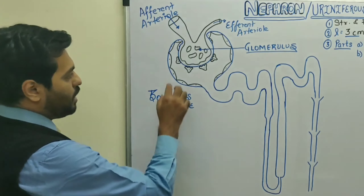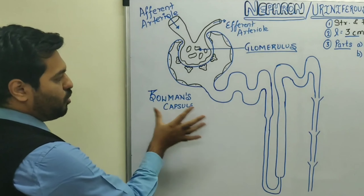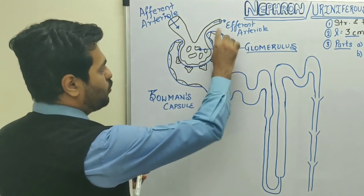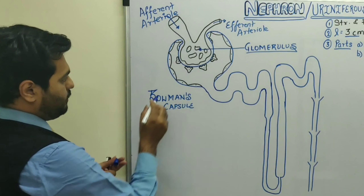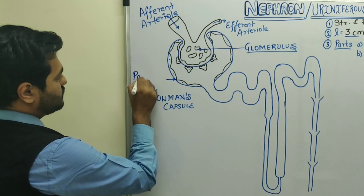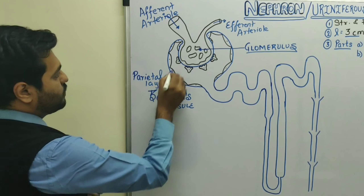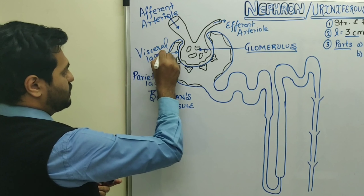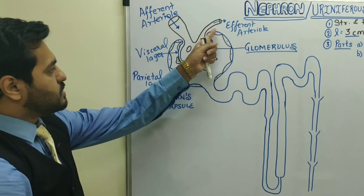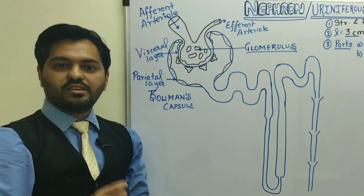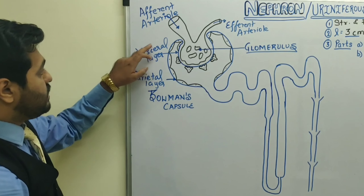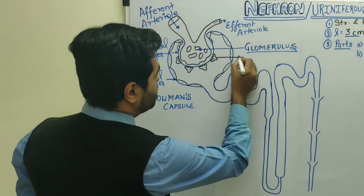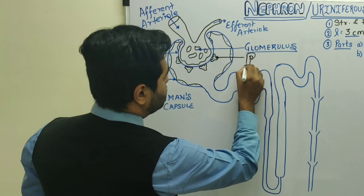This glomerular hydrostatic pressure is responsible for the first step of urine formation — ultrafiltration. Now, Bowman's capsule mainly consists of two walls: the outer wall, known as the parietal layer, and the inner wall, known as the visceral layer. The parietal layer consists of flat squamous epithelium cells. The inner visceral layer consists of specialized squamous epithelial cells called podocytes.